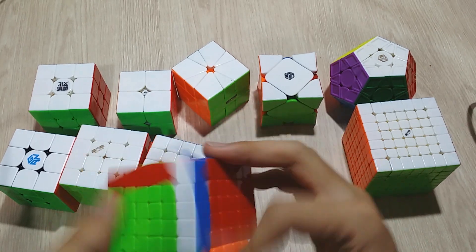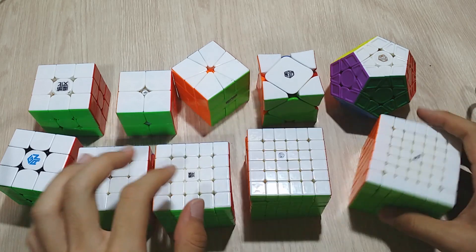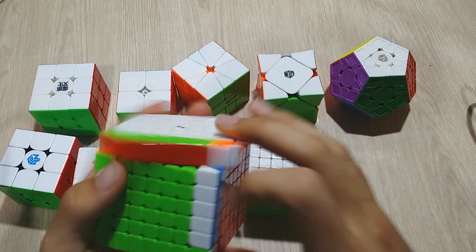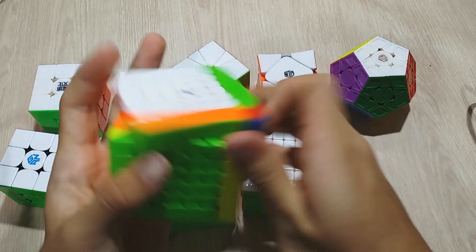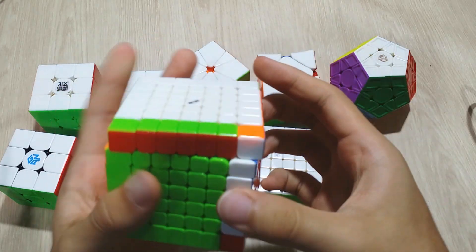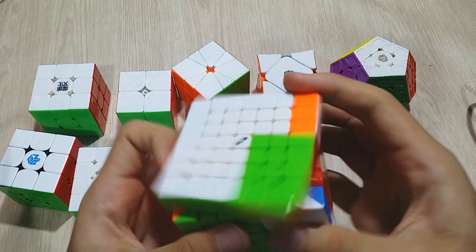But the feeling is very nice. Now for 7x7, I use the Qi Wu Ji. Haven't changed yet because it's still amazing. It's buttery and smooth and very fast. As you can see, I'm not very good at 7x7.